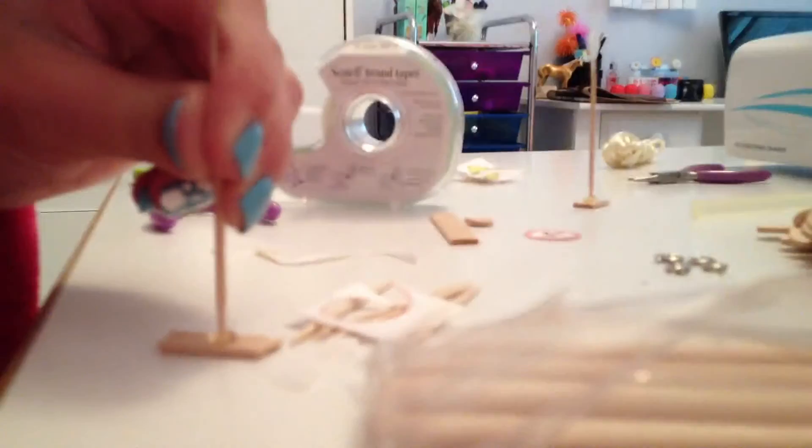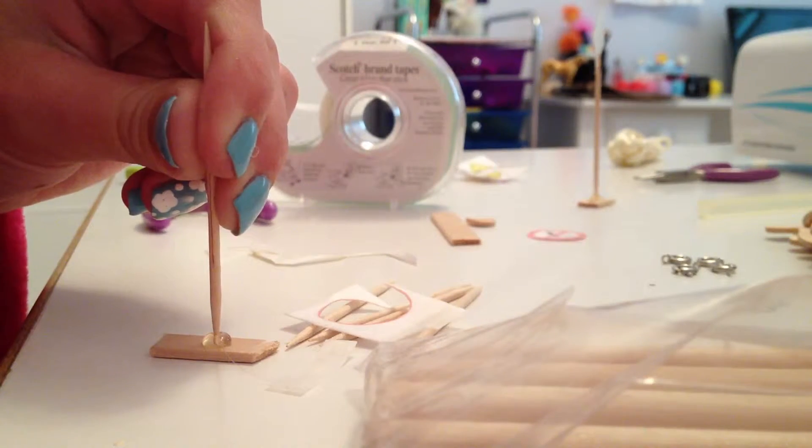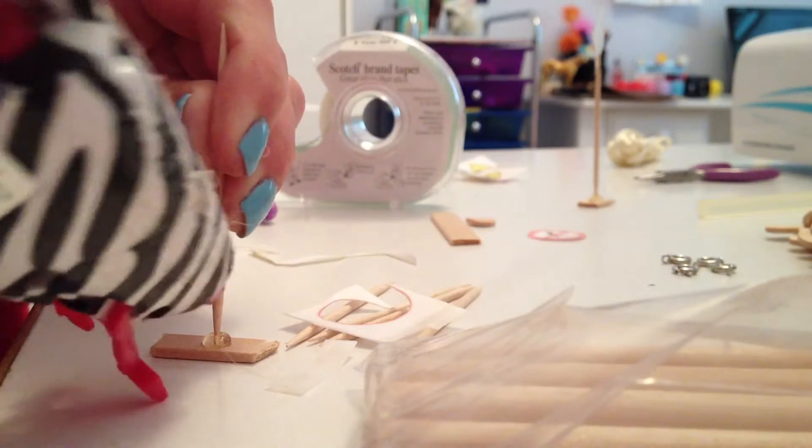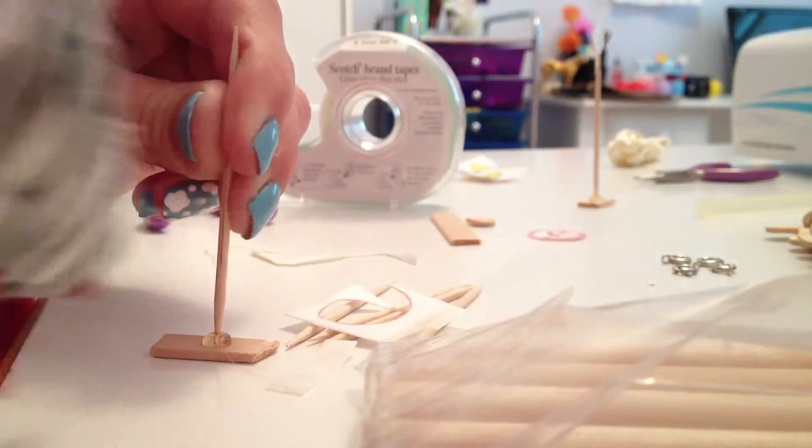So now, take your toothpick or skewer, and your hot glue, or whatever glue of your choice, and put a big dollop of glue in the middle, and then put your popsicle in there. And hold that for about 10 seconds, and then you're going to want to put some extra glue on.